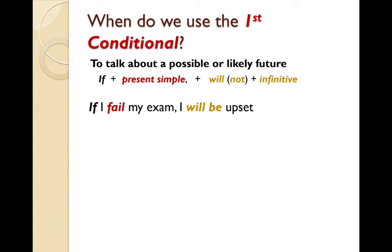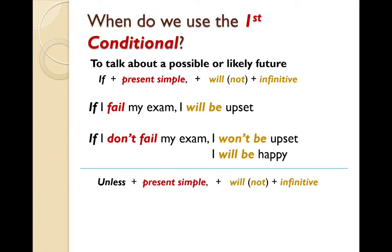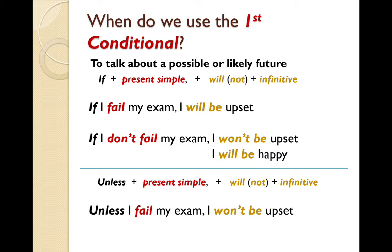If I fail my exam, I will be upset. Now, I can reverse the situation: if I don't fail my exam, I won't be upset — or rather, I will be happy. With 'unless': unless I fail my exam, I won't be upset. 'Unless I fail' is like saying 'if I don't fail'. So the main clause with the negative 'if' is the same as the example with 'unless'.